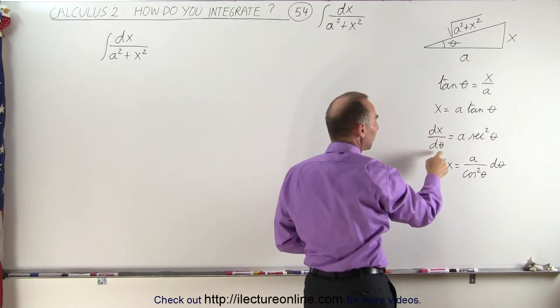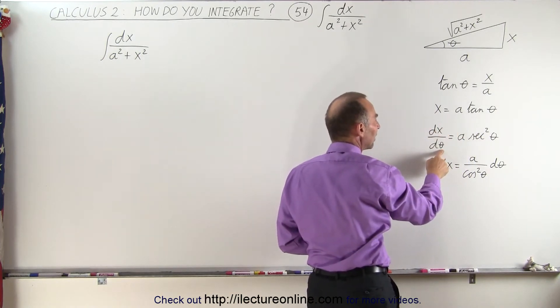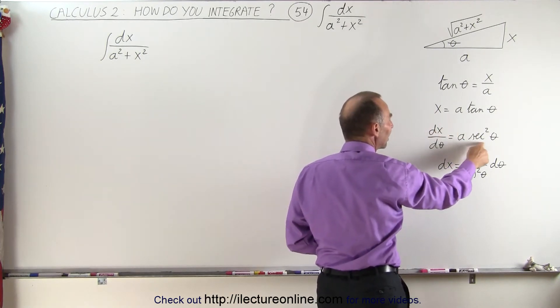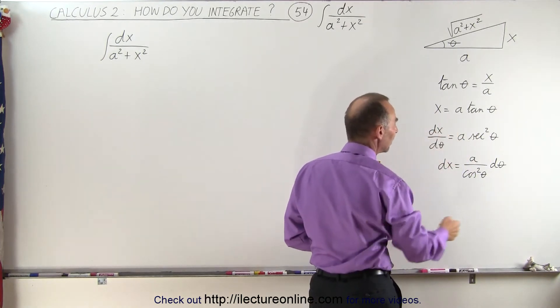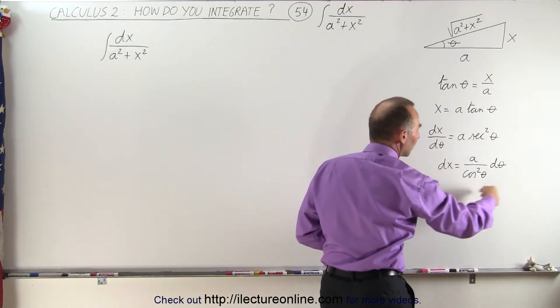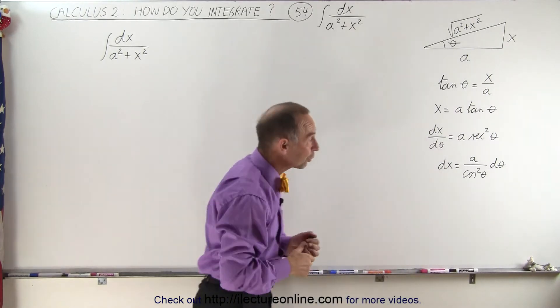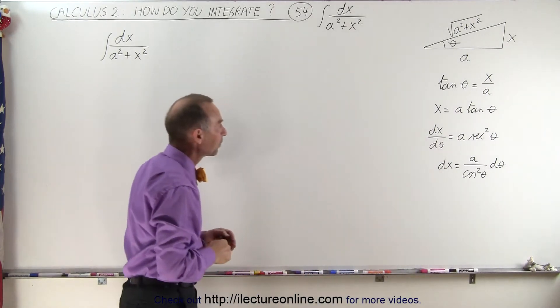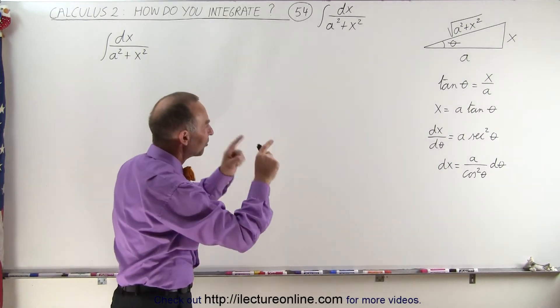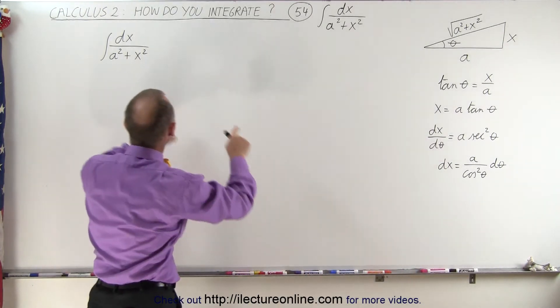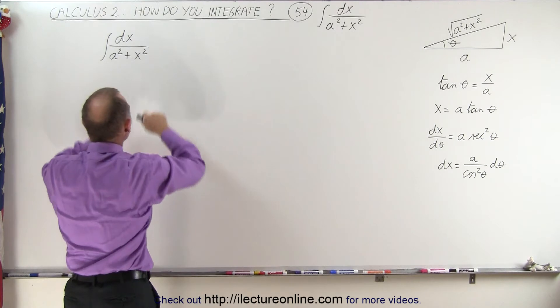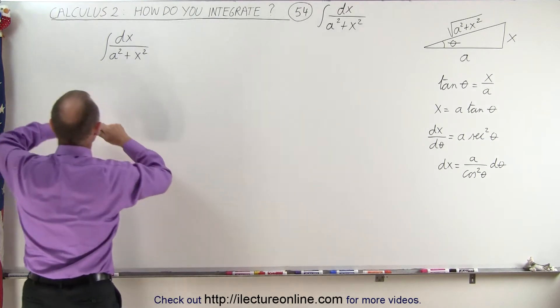And when we take the derivative with respect to theta, we get a secant squared of theta, which can be written as this, as the secant is 1 over the cosine. If we now substitute that into our integral, we get the following.